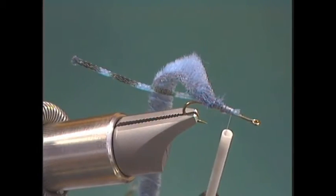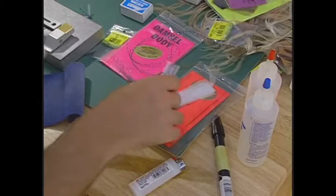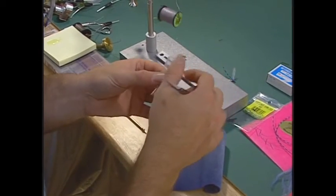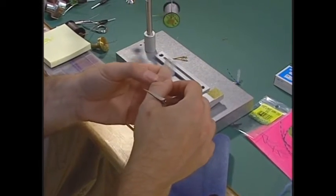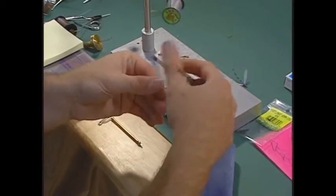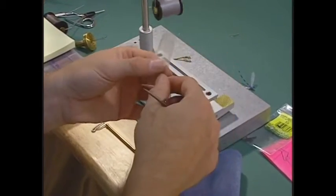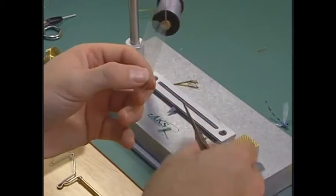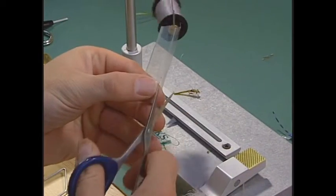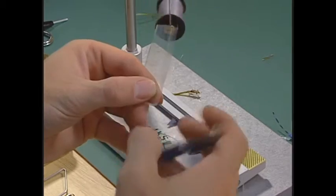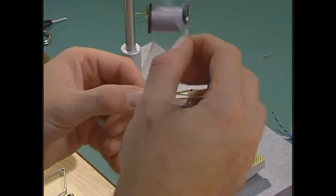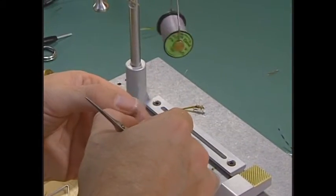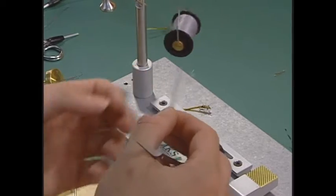Now I'm ready to tie in my wings. For the wings, what I'm going to be using is zing wing. It's one of those synthetic magical materials John Betts came up with that Umpqua Feather Merchants distributes. Now we'll just kind of flatten it out. I'll just make one little cut, rip it off, set it to the side, and I'll cut one more. A little cut, pull it off. This one I'll hold on to, grab my other one, and just kind of even up the tips a little bit. Now I'm ready to tie them in.